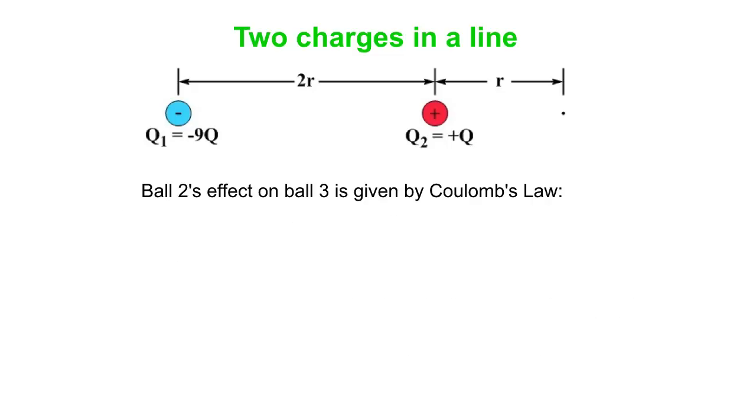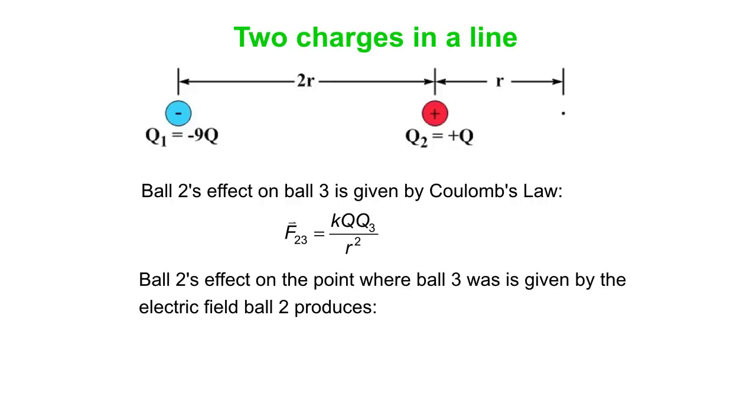Now we're talking about the electric field. Ball two's effect on ball three when it was there is given by Coulomb's law: F23 = KQ Q3 over R squared. Ball two's effect on the point where ball three was is given by the electric field that ball two produces. The field from a point charge goes as KQ over R squared. In contrast, the field from ball one is -9KQ over 3R squared, which works out to -KQ over R squared. These two fields are equal and opposite at that place where ball three was, so they cancel.